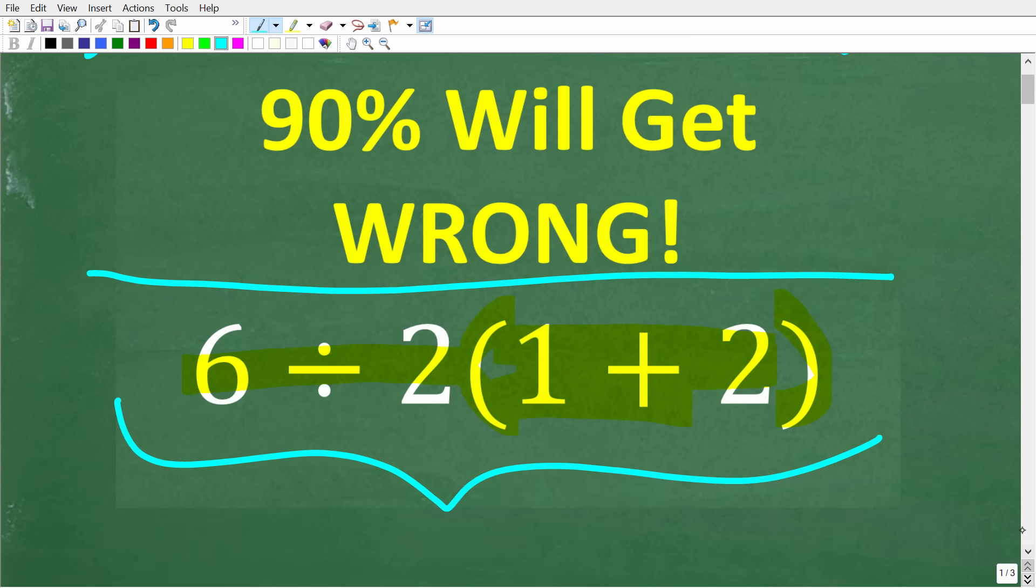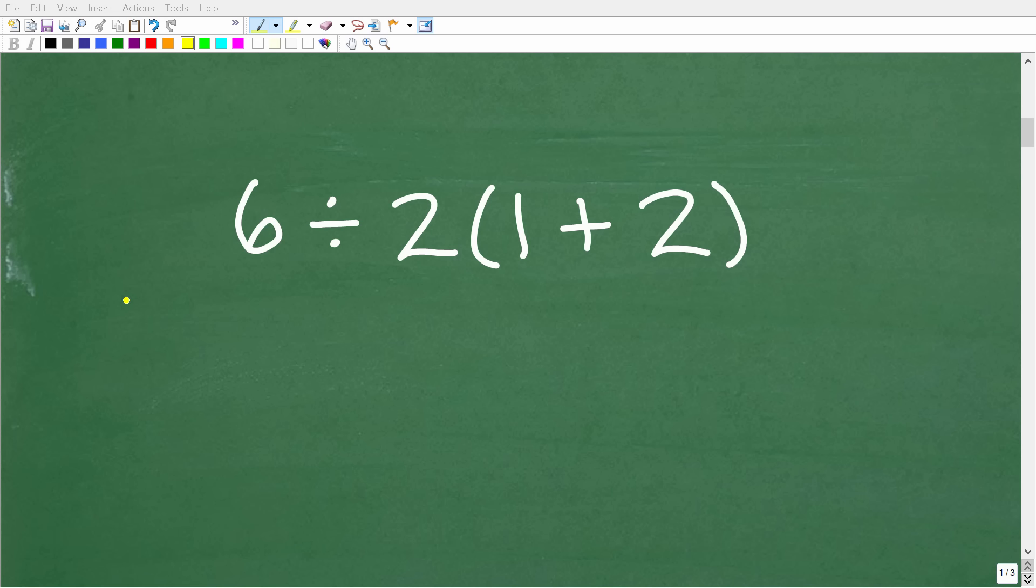Alright so one more time a lot of people are going to get this wrong. It seems like such a simple problem but why? Well let's see exactly why right now. Okay so once again we're not going to use a calculator to solve this problem. I'm going to assume that you know how to add, subtract, multiply, and divide simple numbers. But again why are so many people going to get this wrong? Well it all comes down to the order in which they do this problem.